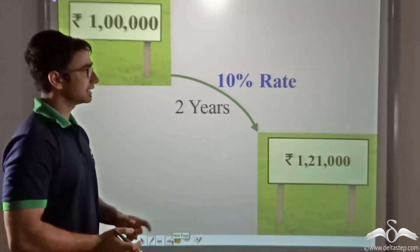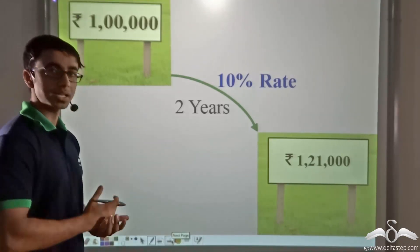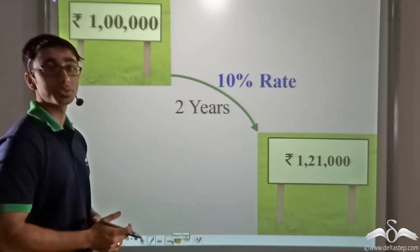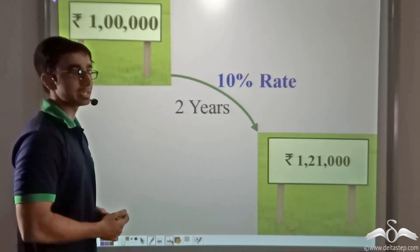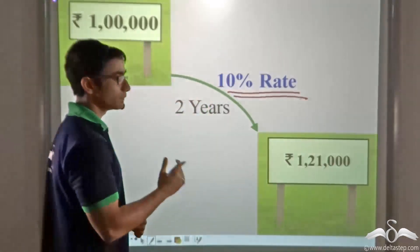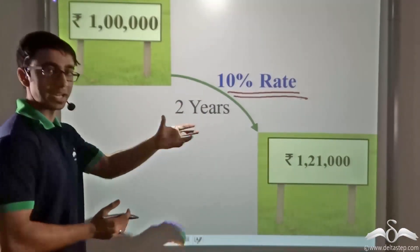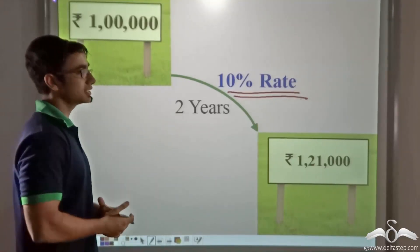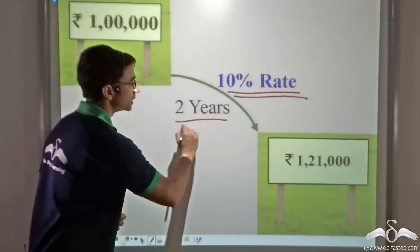Not only that, there is another similarity. We saw that Sudhir's money grew from Rs 1 lakh to Rs 1 lakh 21,000 at a rate of 10% compounded annually by the bank. Even in the case of the value of land, it grew at a rate of 10%. Now obviously we can't use the terms compounded annually in the case of land. So what do we call this? We say that there has been a certain growth in the value of land in two years.